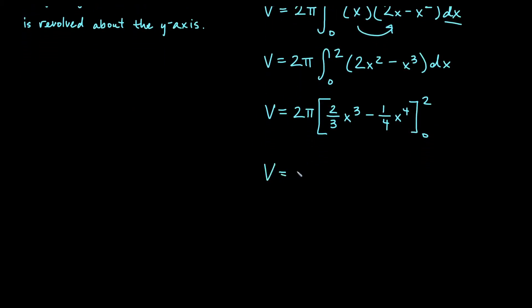So for this one here, let's plug in 2 first. We'll get 2π. Start my brackets. So plugging in 2, I would get 2 thirds times 2 cubed, which would be 8, minus 1 fourth times 2 to the 4th, which is 16, minus, if I plug in 0, I will get 0 for the first term, and I will also get 0 for the second term, so those do not contribute anything.